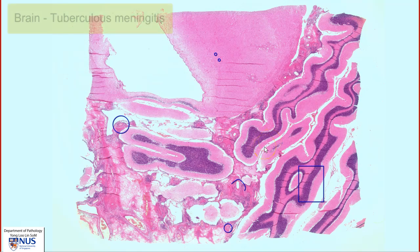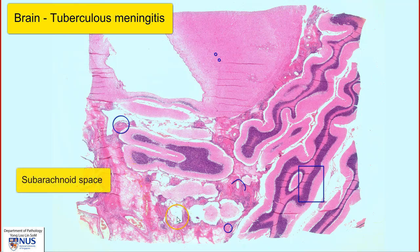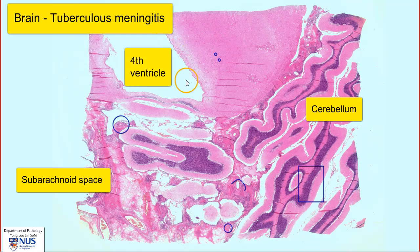This is a virtual microscopy slide of a case of tuberculous meningitis or TB meningitis involving the cerebellum. This is the area of the meninges or the subarachnoid space. Here we have viable cerebellar parenchyma, and this is the fourth ventricle.